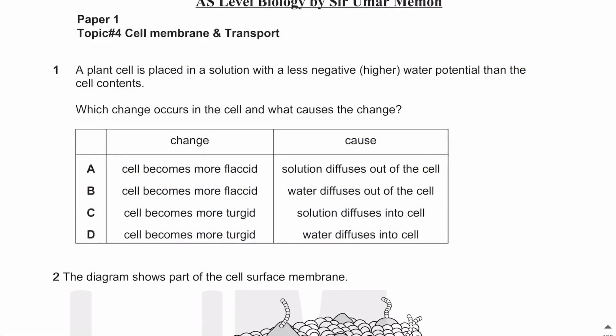Assalamu alaikum everyone. In this video lecture we will be solving some MCQs from the chapter Cell Membrane and Transport, which is part of AS Level Biology 9700. Let's start MCQ number one: a plant cell is placed in a solution with a less negative or higher water potential than the cell contents. Which change occurs in the cell and what causes the change?